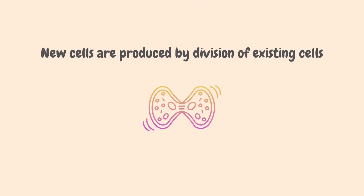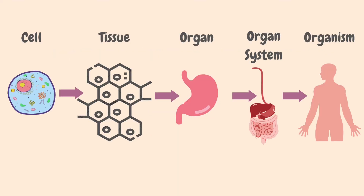An organism is made of many cells, so how are new cells made? They are produced by the division of existing cells — a single cell divides to make two cells, and these two cells divide to make four cells, and so on. The most basic unit is the cell. Groups of similar cells form tissues. Groups of different tissues make an organ. A group of organs function together to make an organ system. Cells, tissues, organs, and organ systems combine to form a multicellular organism.